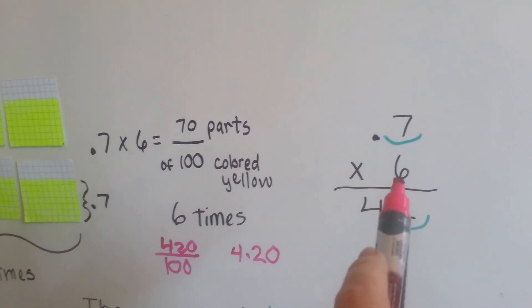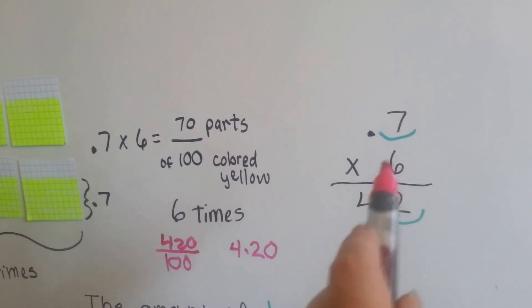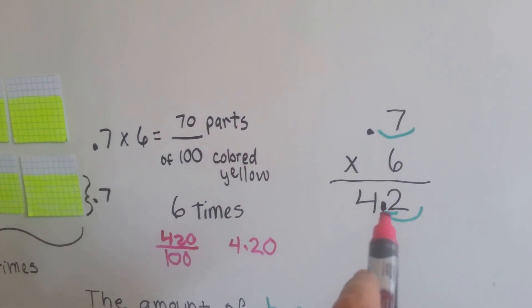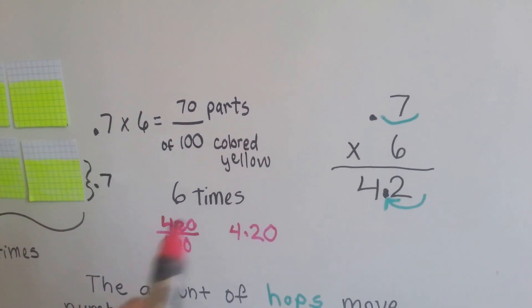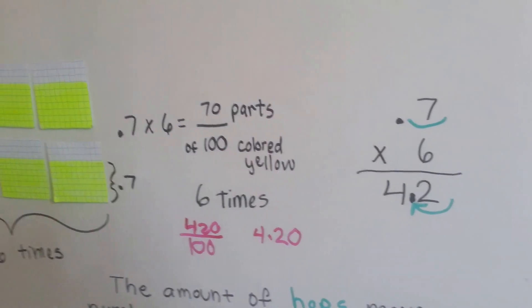If we did the math this way, we would have seven tenths times a full six. There's no decimal points. We only have one hop. We do one hop and we're at 4.2. See? Four and two tenths.